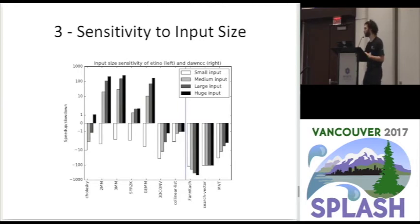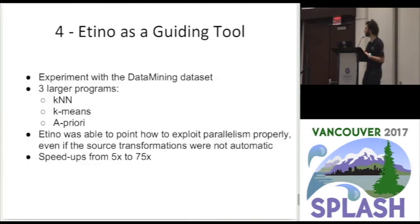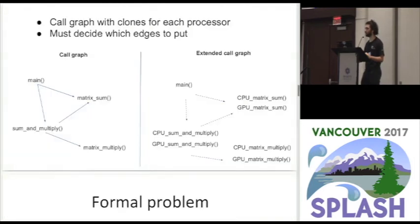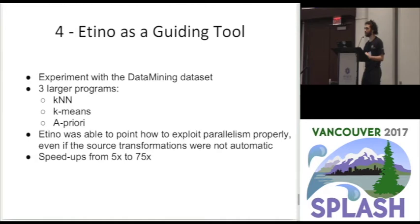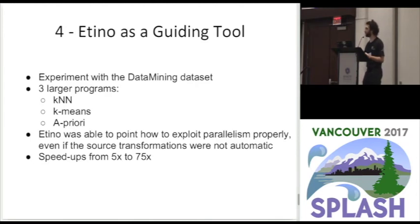If the largest input still incurred a slowdown, it means we could not grow the input further to eventually get a speedup. Also, DonCC cannot automatically transform all programs — there are many it cannot handle. But even in those cases, we can still use Ethno's cost model and scheduling algorithm to tell us which computations should go to the GPU, and then manually perform those changes in the program. The data mining benchmark suite, with three larger programs, served this purpose — DonCC could not transform these automatically.